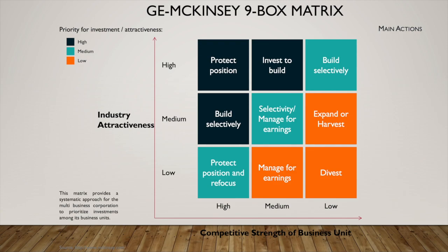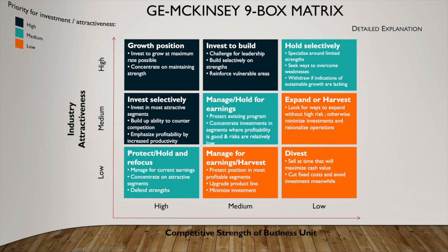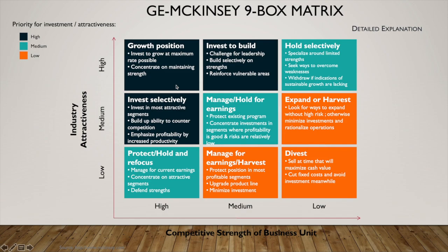The position a product occupies on the matrix drives future strategy. There are three primary recommendations to consider, with two being separate yet similar to the other. A growth strategy is prudent when a product has a competitive advantage in an attractive market. Investment in growth and a focus on maintaining strengths is a priority, and profitability can also be increased with an emphasis on productivity.